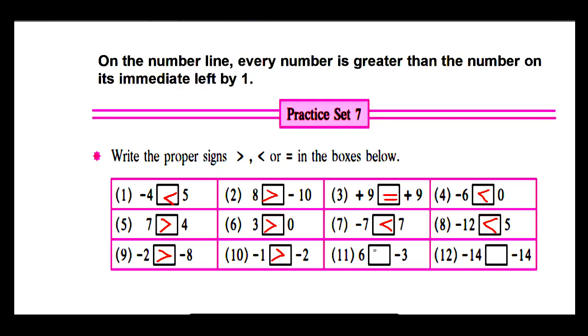Example 11: 6 and negative 3. 6 is greater than negative 3. Example 12: negative 14 and negative 14. Same numbers, so it's an equal sign.